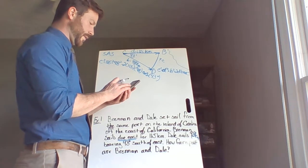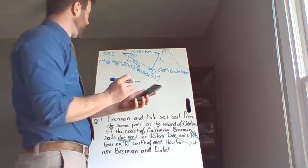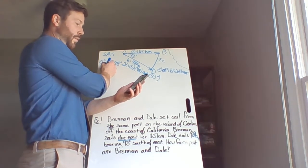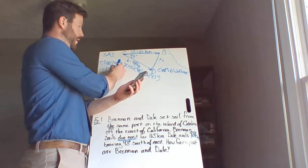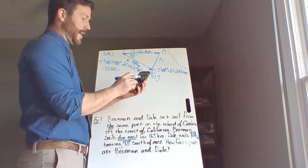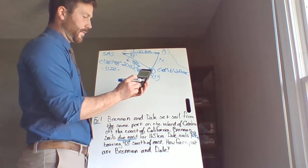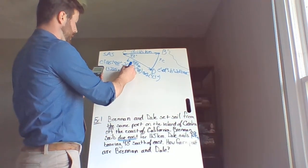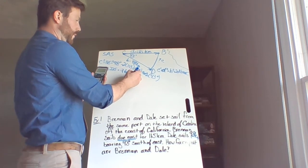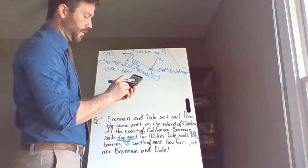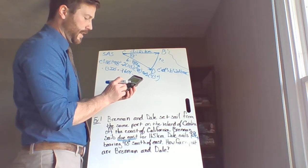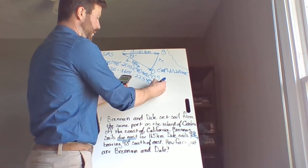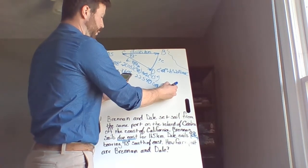So I'll open up my calculator app on my phone, and I'll do 115 squared, which is 13,225. Do 98 squared, which is 9,604 minus 2 times 115 times 98, 22,540 times the cosine of 43 degrees.